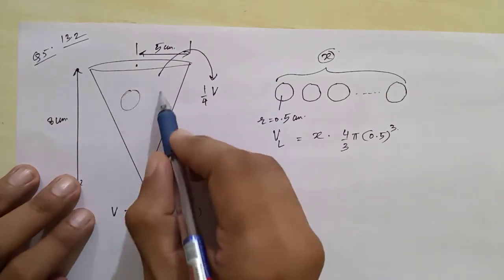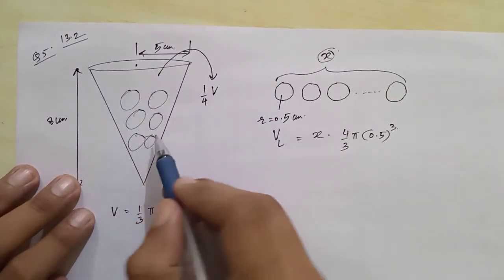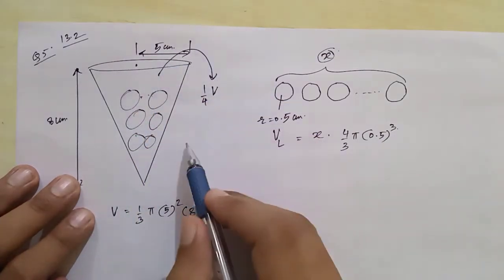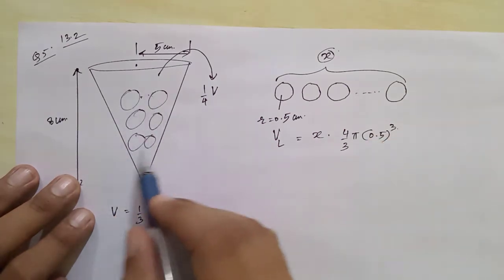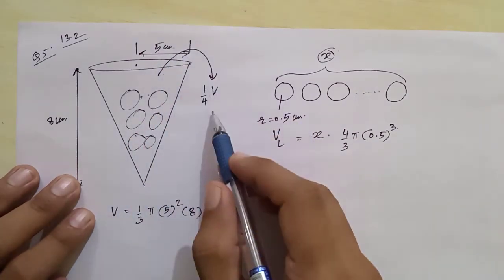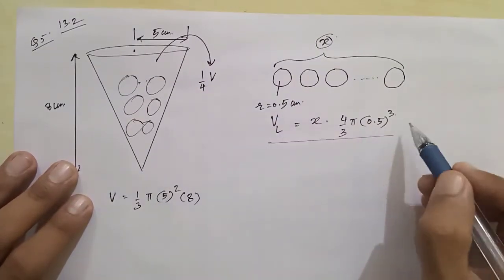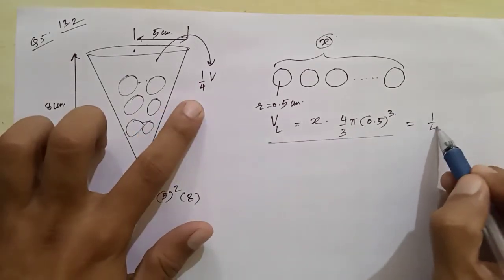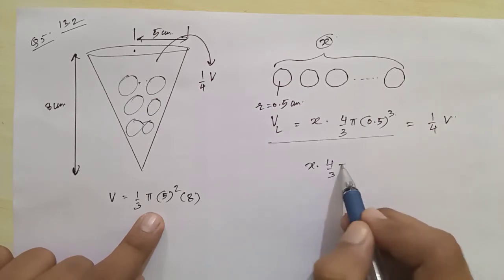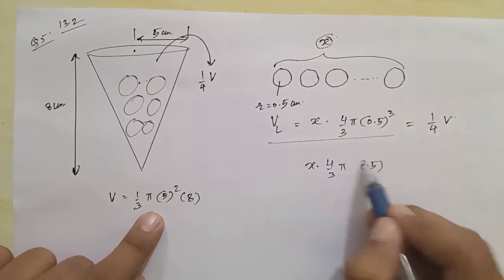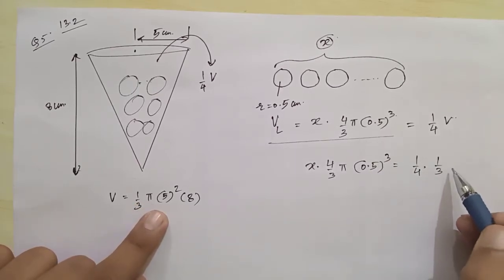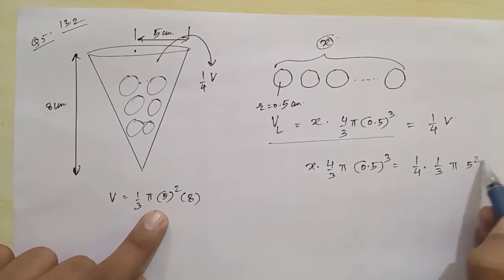When the lead shots are dipped in, one-fourth of the volume flows out. The concept is that the total volume of lead shots equals the volume that flows out. So volume of x lead shots equals 1/4 of V. And V value we already calculated. So: x × (4/3) π (0.5)³ = (1/4) × (1/3) π × 5² × 8.